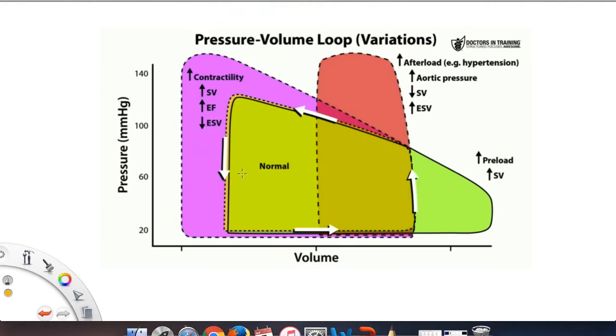Alright, now let's take a look at what happens to the pressure volume loop curve when we change afterload, preload, or contractility. First let's look at what normal is. We're going to highlight the stroke volume and end systolic volume and look at what happens to these values when we change different parameters.